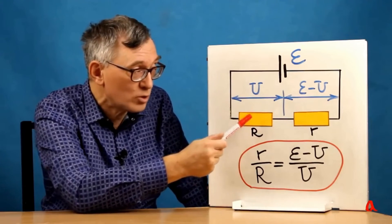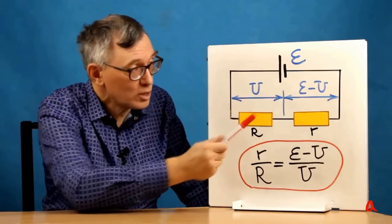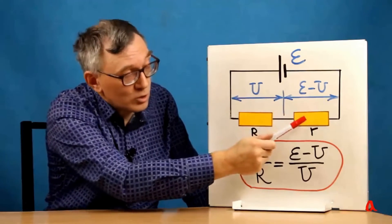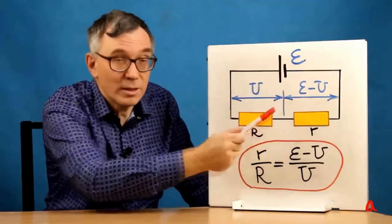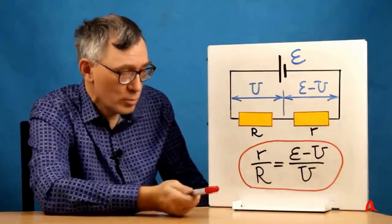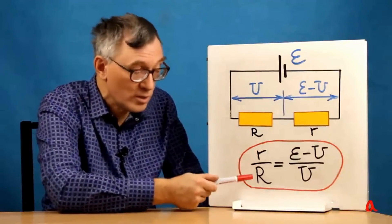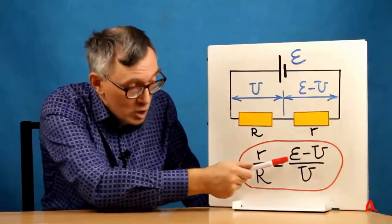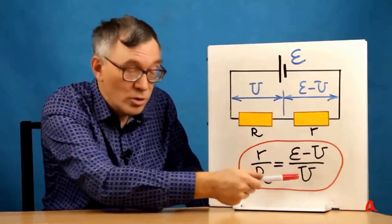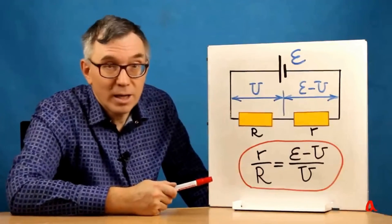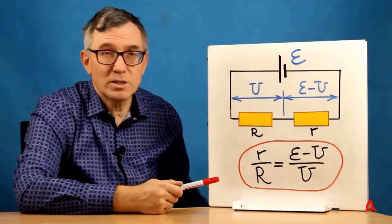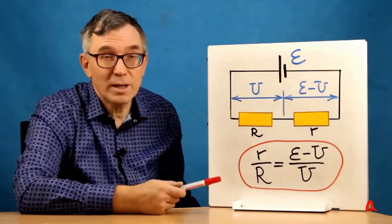If the voltage U drops across the load resistance, then ε minus U drops across the internal resistance of the circuit, as dictated by Ohm's law. And we can establish a proportion where the internal resistance to the load resistance equals the ratio of ε minus U to the voltage U. And based on this proportion, we can express the internal resistance and calculate its value.